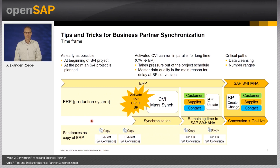What can also happen is that functional departments come up with specific or more detailed requirements for their master data that now need to be introduced into the business partner design. In some of my recent projects, we started with a well-defined scope, but the world around didn't stop moving. We recognized during runtime that there are new applications to be implemented that require business partner as well. These kinds of projects also affect the duration of business partner implementation.